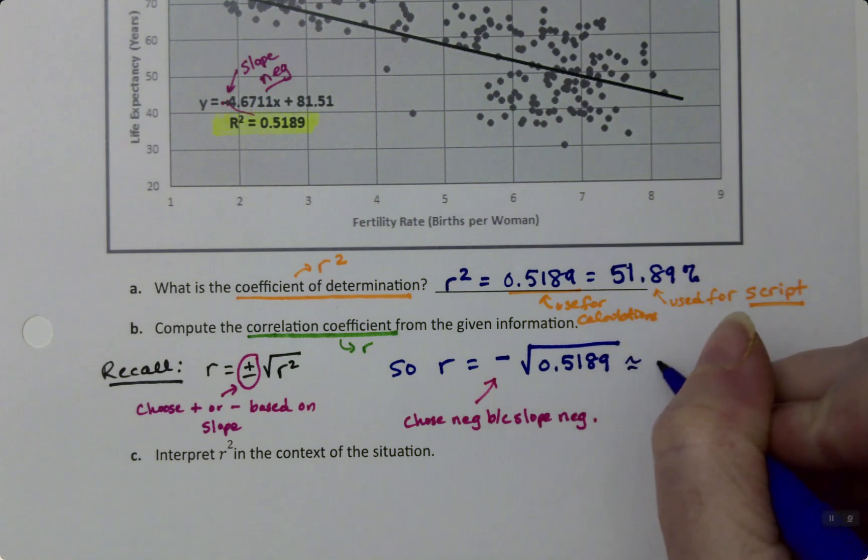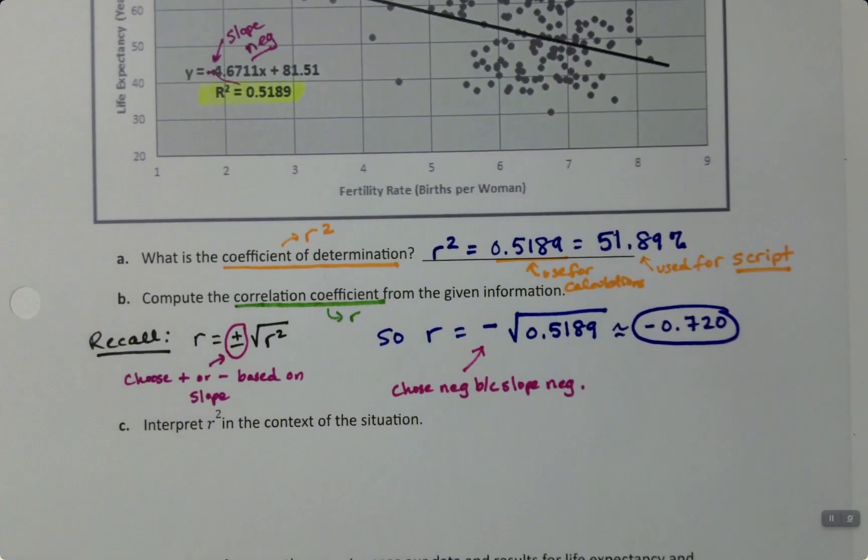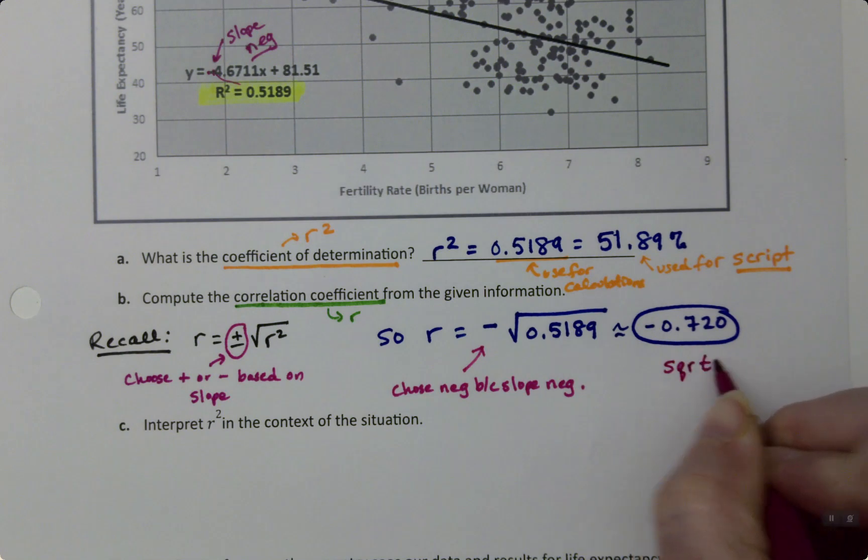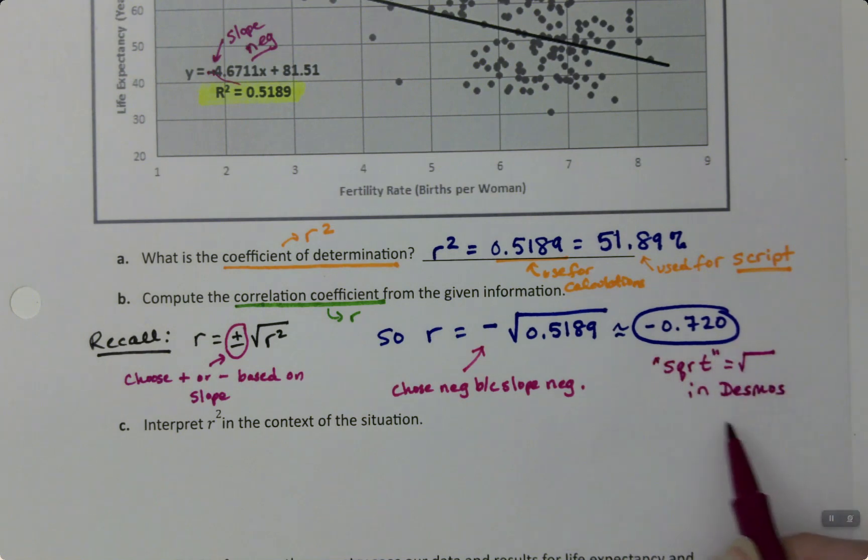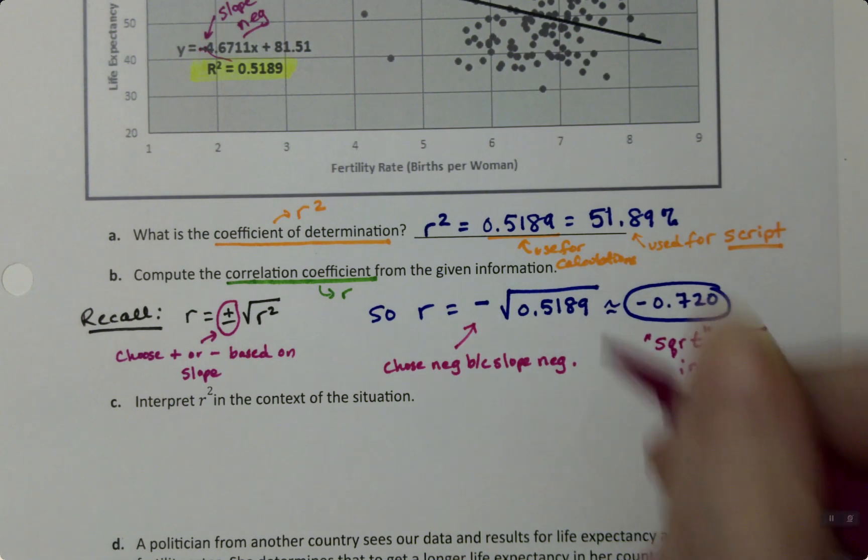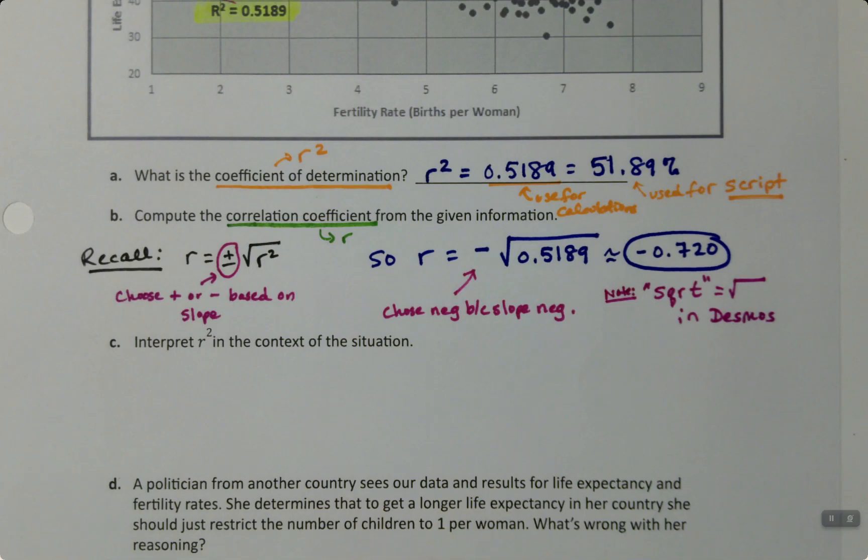Alright, this is negative 0.720. Right? So if you type SQRT in Desmos, it will bring you that square root symbol up, so you might want to make a note of that. Again, you don't have to, you can use the keyboard if you like. I just don't, I just use the SQRT.